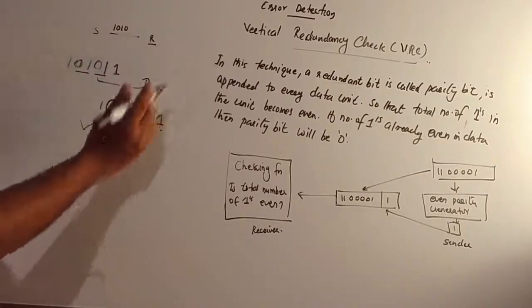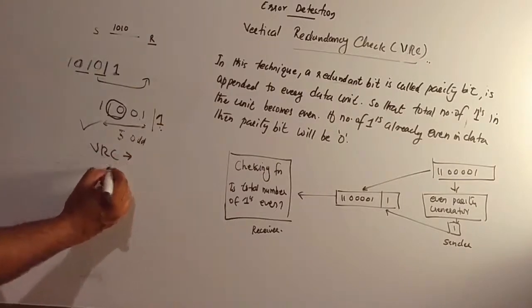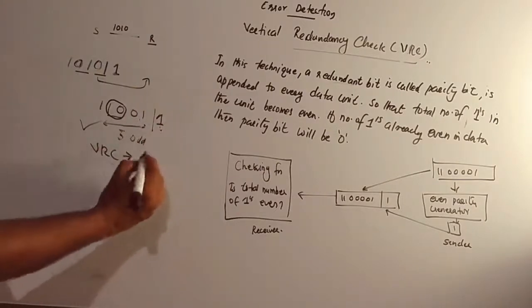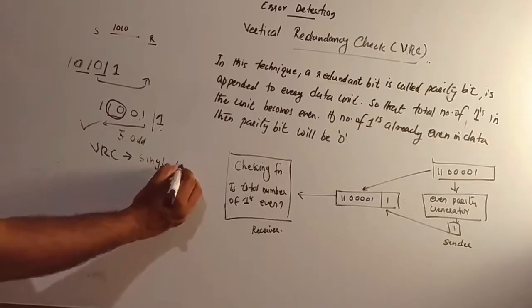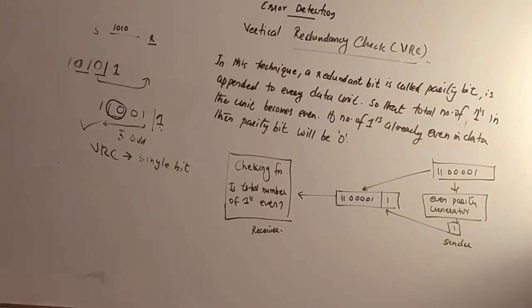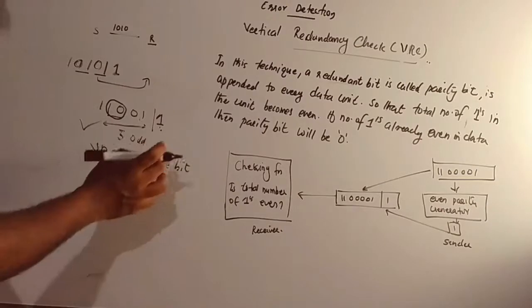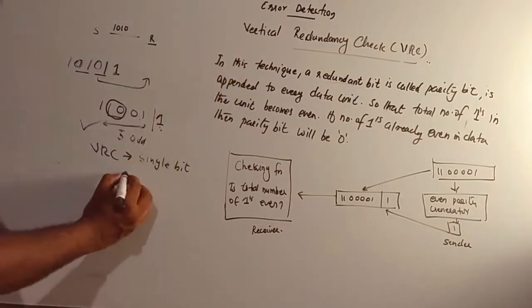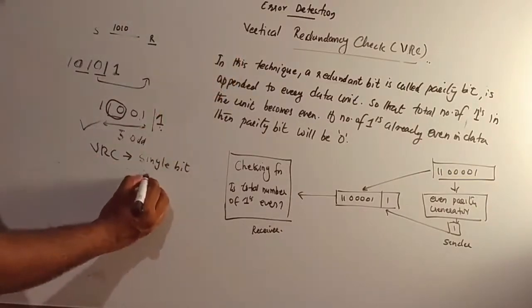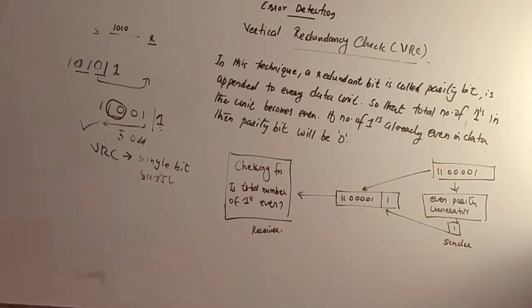The VRC algorithm is most suitable for single bit error detection. VRC is best for single bit error detection.